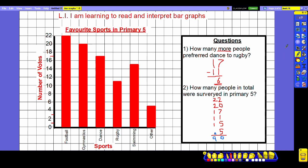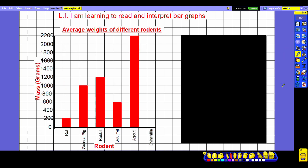This next graph is a little bit different. It's comparing the average weights of different rodents according to the title. We can see the categories once again at the bottom. We can see that the y-axis is showing us their mass in grams and in this case it's going up 200 at a time.